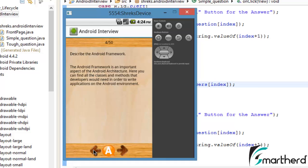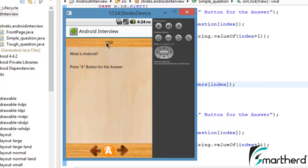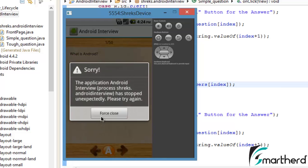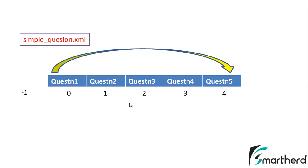Now go left, left, left — when we go before the first question we don't have any content, so our app will probably crash. And yes, our application has crashed. This is because in our SimpleQuestion XML we have an array. Suppose this array is of length 5 — indices 0, 1, 2, 3, 4. If the current index is 0 and the user presses the left button, then index minus-minus results in minus 1. At position minus 1 we don't have any element, so it throws a NullPointerException and the program crashes.